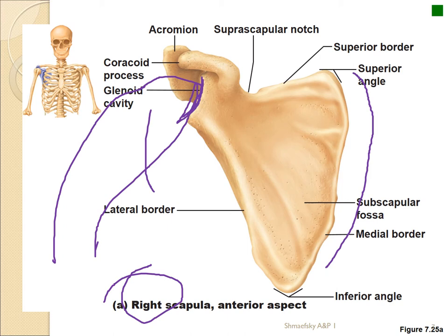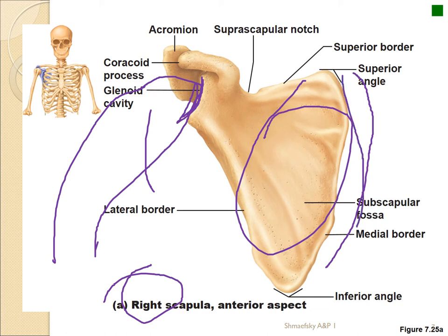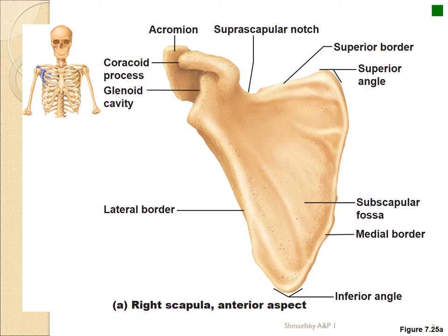Think about what these borders are: the medial border is a big area for muscle attachment found along the back, and there's your lateral border. Pay attention to the coracoid process and the acromium, because these are major attachment points to the clavicle and also to the muscles that help us lift the arm and move the scapula to lift the shoulder.